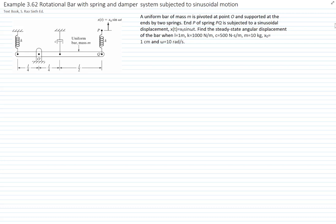At point P, spring PQ is subjected to a sinusoidal displacement x0 sine of omega t. We want to find the steady state angular displacement of the bar when L is 1 meter — the total length of the bar is 1 meter. The spring constant for both springs is 1000 N/m, the damper constant is 500 N·s/m, the mass of the bar is 10 kilograms, the displacement x0 is 1 centimeter, and the excitation frequency is 10 rad/s.